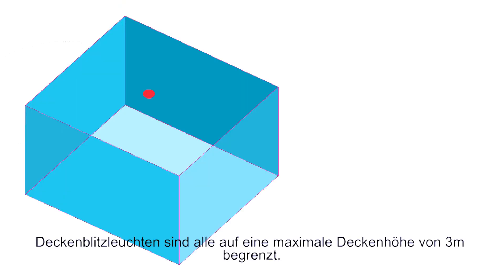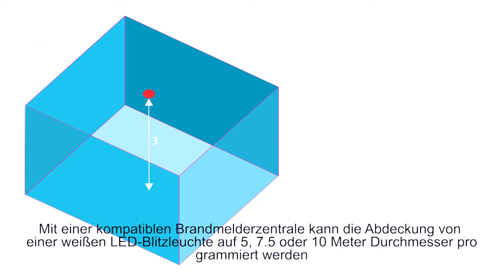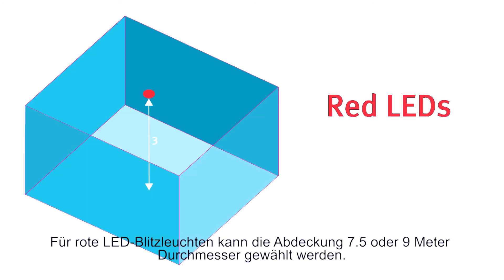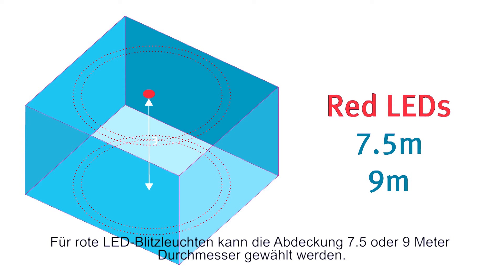Both devices have the capability of variable coverage volumes, and this helps simplify the range. For the ceiling beacons, these volume coverages are all based on a maximum ceiling height of 3 metres. Subject to control panel compatibility, you can set the coverage of a white LED beacon to 5, 7.5 or 10 metres diameter. For red LED beacons, this coverage can be set to 7.5 or 9 metres diameter.